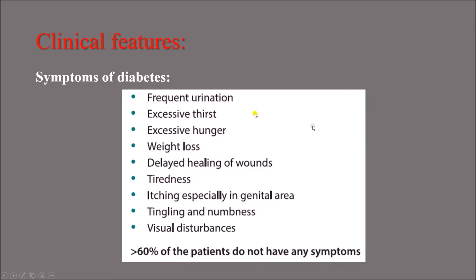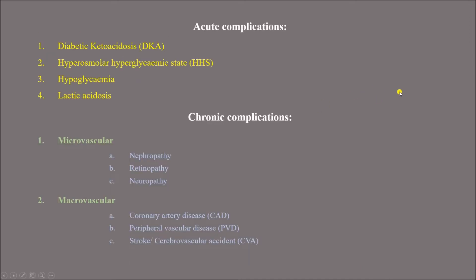Regarding clinical features: a person with diabetes can have polyuria (frequent urination), polydipsia (excessive thirst), and polyphagia (excessive hunger). There may also be weight loss, delayed healing of wounds, tiredness, itching especially in the genital area, tingling and numbness, and visual disturbances. However, we must remember that more than 60% of patients do not have any symptoms — diabetes may be discovered incidentally during routine investigation.